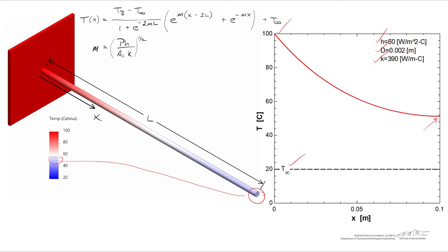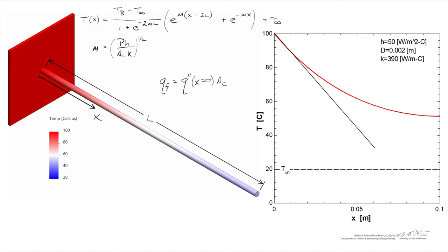The first thing we're after is the rate at which the fin is pulling heat from the base. That rate in watts is going to be equal to the flux evaluated at x = 0, multiplied by the cross-sectional area. Because the flux depends on the temperature gradient, the flux equals the conductivity multiplied by the cross-sectional area times the gradient at x = 0.